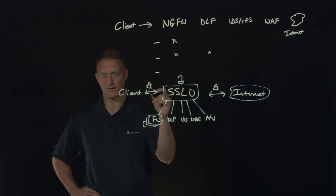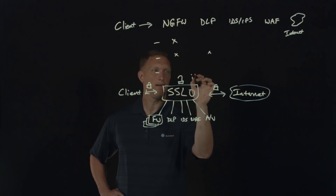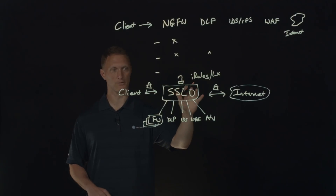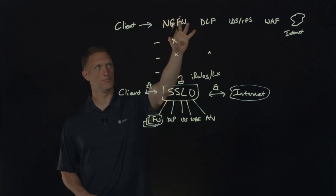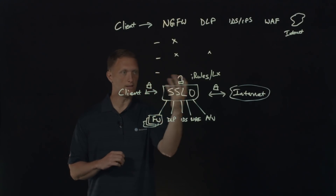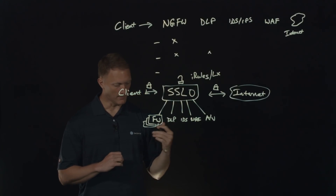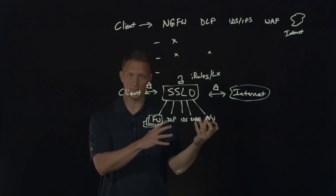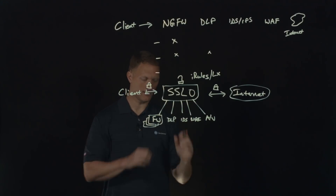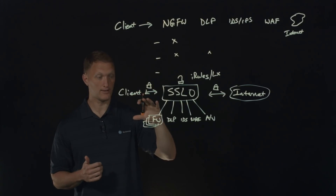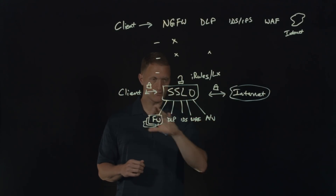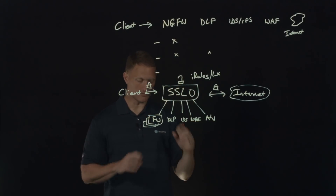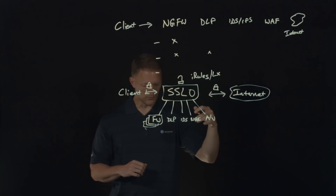A couple of other things worth mentioning: you can augment traffic on the fly using iRules — F5's scripting language — and also iRules LX. You can do a whole lot with iRules, such as manipulating traffic on the wire, injecting different headers, and port remapping. For example, SSL Orchestrator can remap port 443 to 8443 if needed. It can also be set up as an explicit or transparent proxy device, and from a topology standpoint it can be a Layer 2 or Layer 3 device for inbound and outbound traffic.